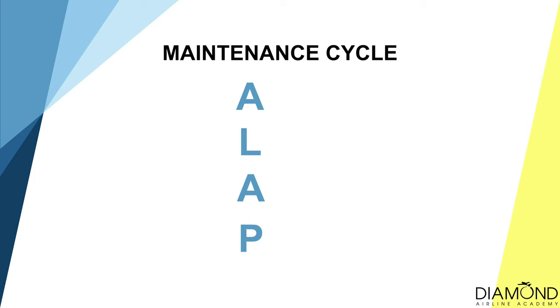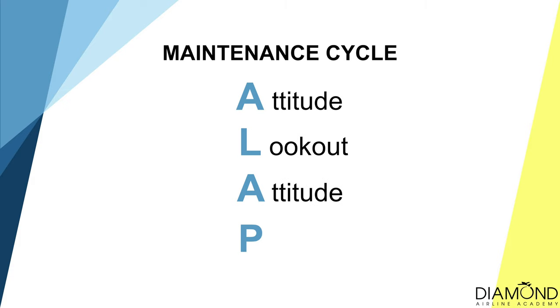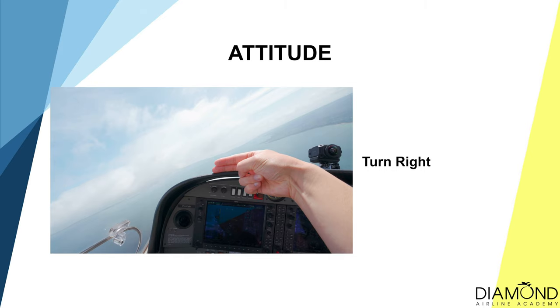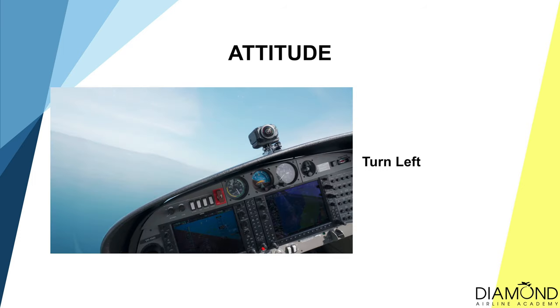During the turn, we use the work cycle ALAP to maintain it — Attitude, Lookout, Attitude, Performance. For attitude: when turning right, the horizon should be on the top-left corner of the dash by about two fingers; when turning left, the horizon cuts through the middle of the standby instruments. Lookout: look into the direction of the turn to ensure no traffic in the area. Attitude again: maintain the same attitude as initially set. Performance: check the altimeter to confirm we are maintaining the same altitude throughout the turn.